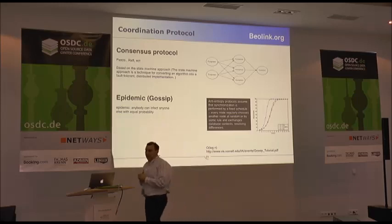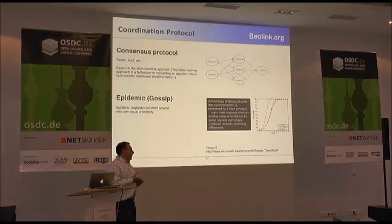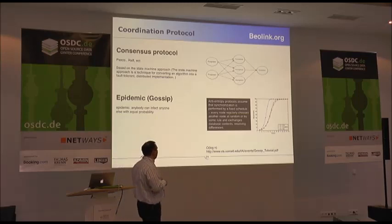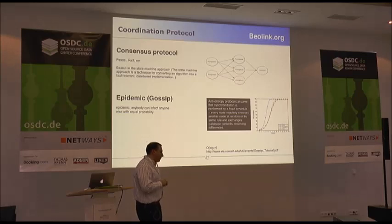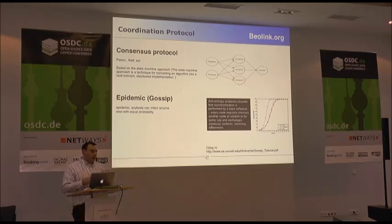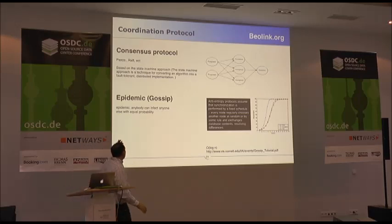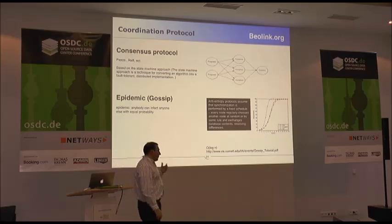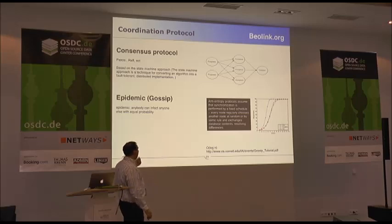After a couple of interactions all elements in the cluster have the same information. In most cases it's faster than consensus, which requires all parties to agree on a specific value, collect information, and elect a new master. The consensus protocol is used mainly in databases for commit — two-phase commit. The epidemic protocol is used more for failure detection.